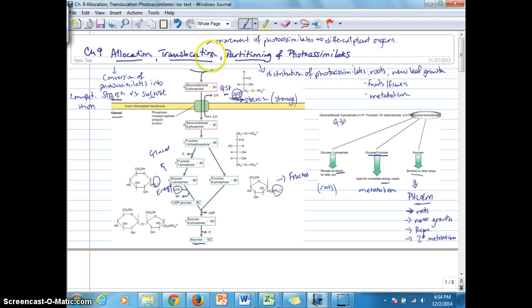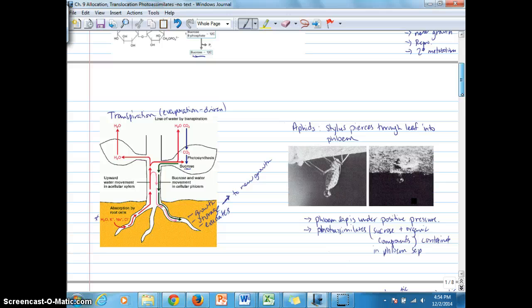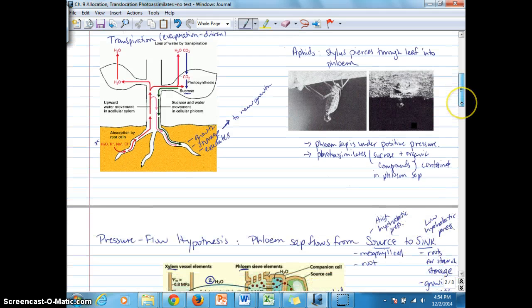We also discussed translocation to move those photo assimilates around. Photo assimilates are moved through the phloem, and we talked about how aphids helped reveal some of the functions associated with phloem. Phloem sap is under positive pressure and includes high concentrations of sucrose, which are the products of photosynthesis that are transportable around the plant, plus other organic compounds.